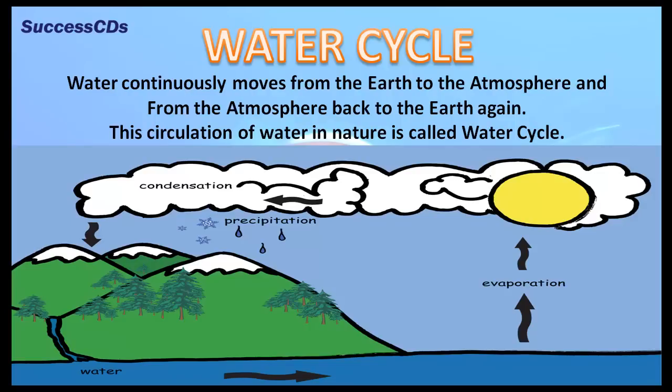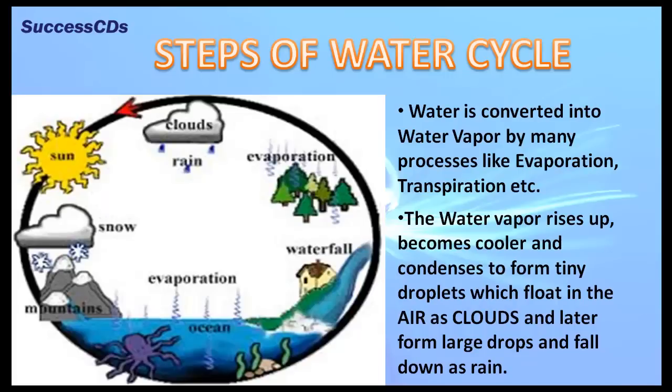The water cycle takes place in various steps. First, water is converted into water vapor by many processes like evaporation and transpiration.